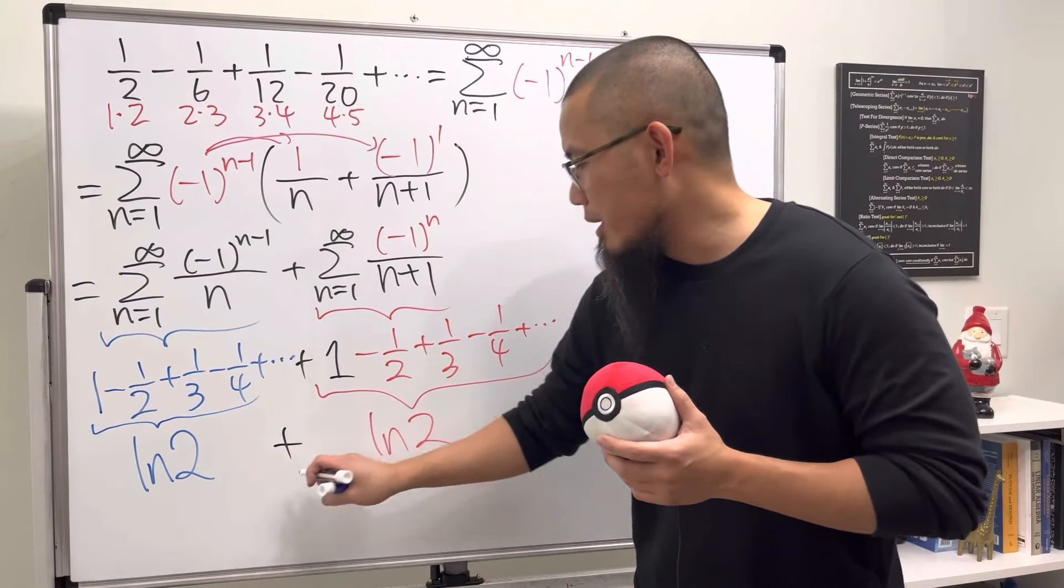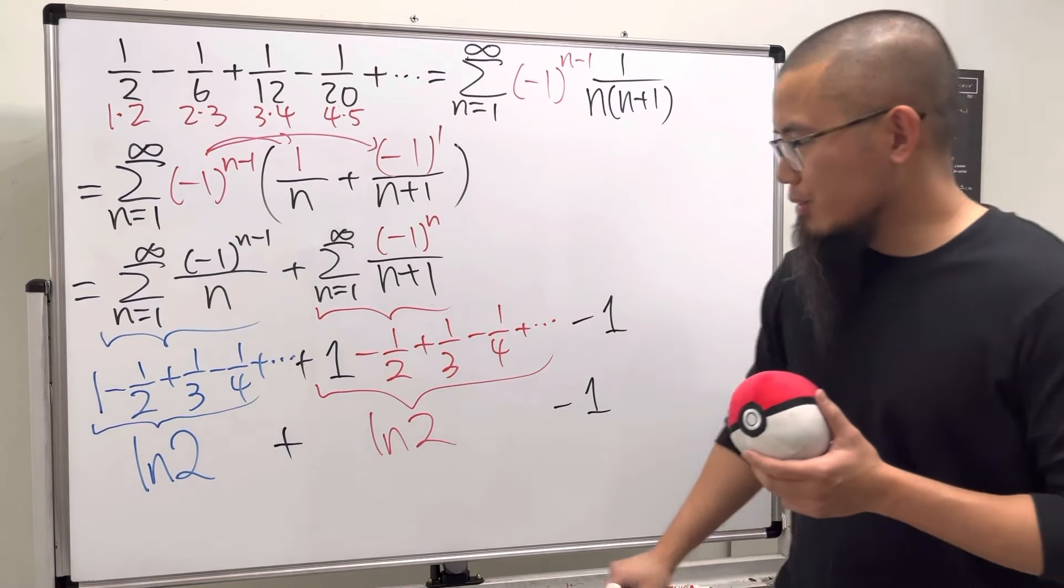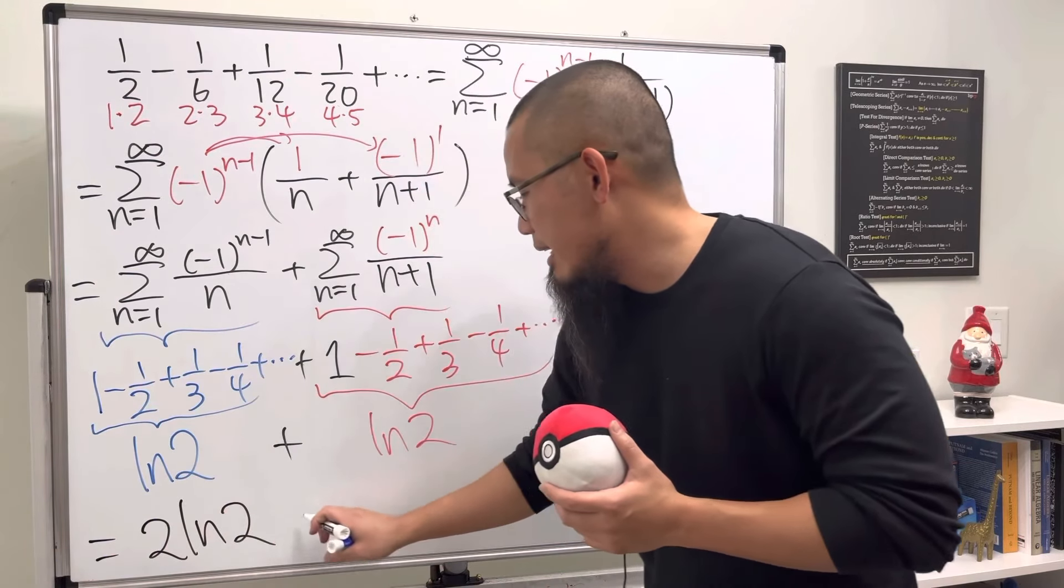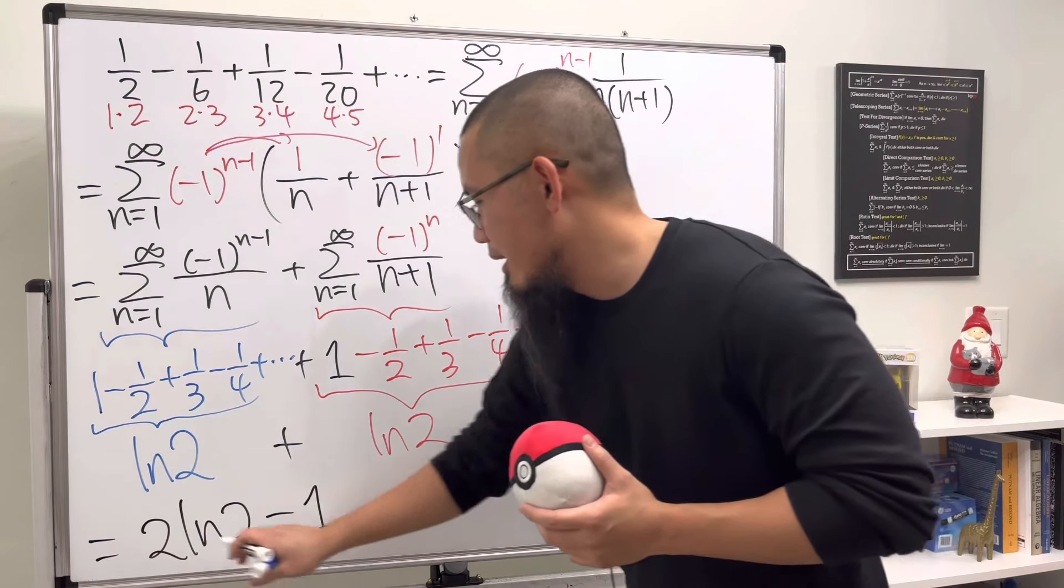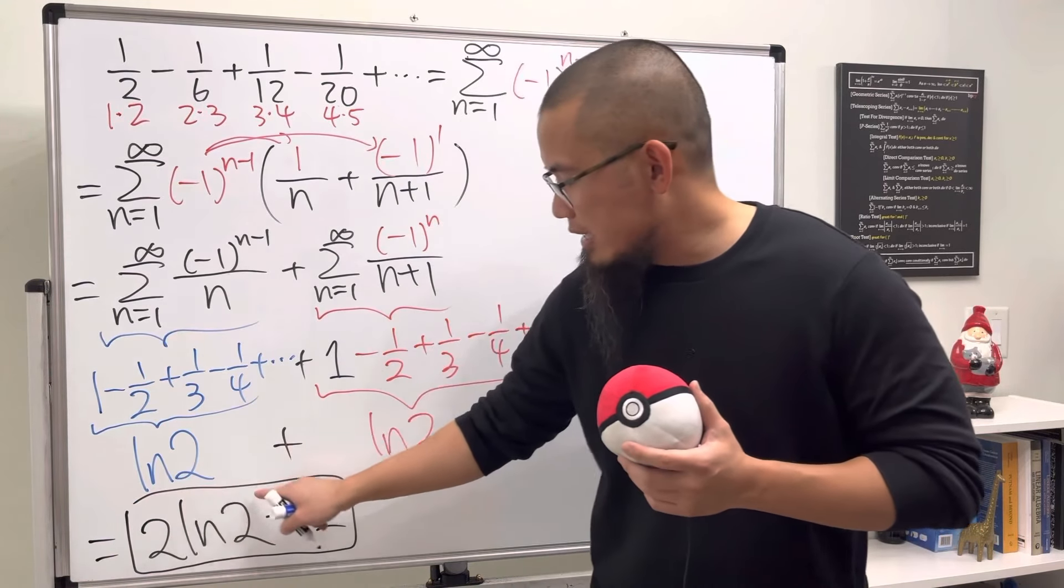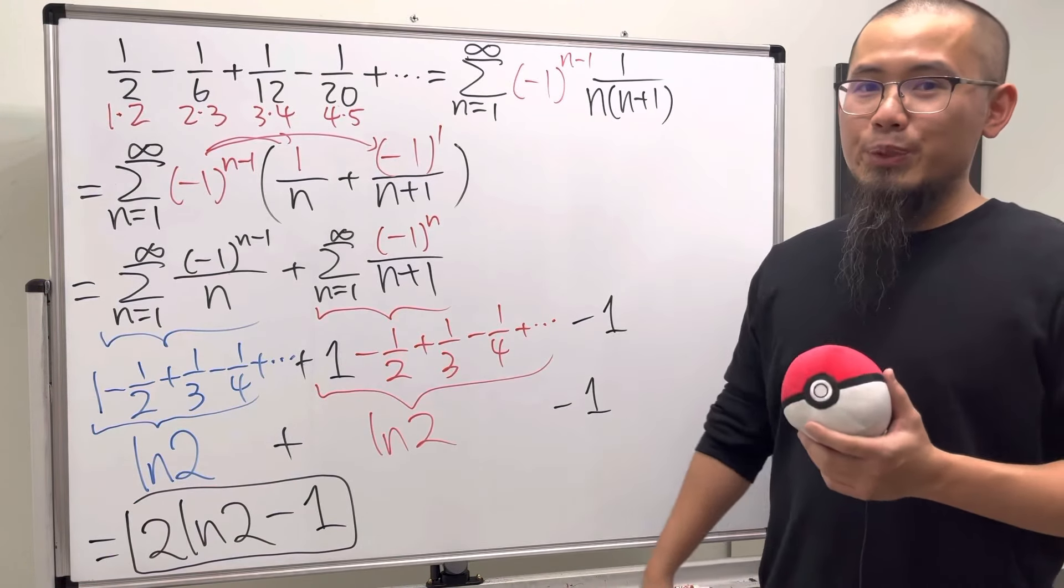And then we have another ln(2), and we're going to add them together, and in the end we minus 1. So all in all, I'm just going to write down we have 2ln(2) and then minus 1. And if you want to be fancy a little bit, you can put the 2 to the exponent and say that's ln(4), but I'm going to leave that to you. So this is pretty cool.